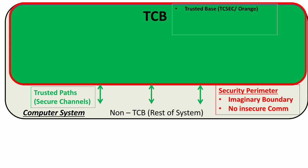This TCB is defined by the Trusted Computing System Evaluation Criteria or TCSEC, also known as the Orange Book. The Orange Book was formulated by the US Department of Defense in the 1980s and is now replaced by the Common Criteria in 2005, but this definition of TCB is still valid today. The Orange Book defines TCB as a Trusted Base containing the subset of a computer system comprising critical and sensitive hardware, software, and controls. This TCB enforces the security policy of the computer system and should be small enough to allow easy analysis by security experts.